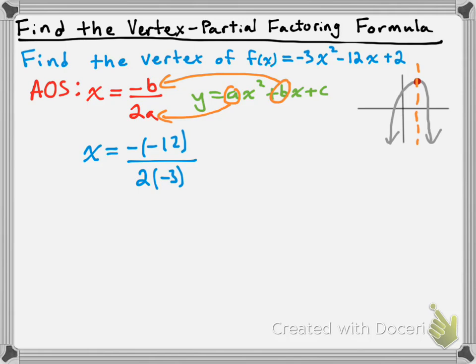So we get the negative of negative 12 divided by 2 times negative 3. Simplifying: the negative of negative 12 is positive 12, and 2 times negative 3 is negative 6. So we have 12 divided by negative 6, which gives us an axis of symmetry of negative 2. That negative 2 tells us the x-value of our vertex.